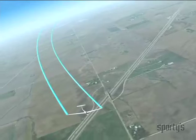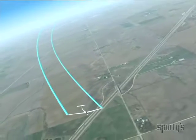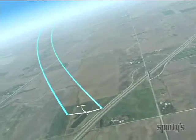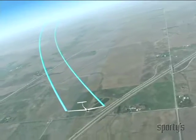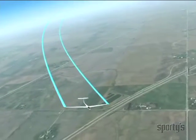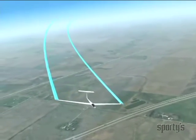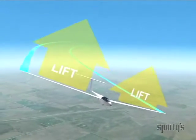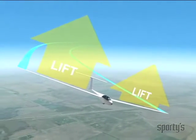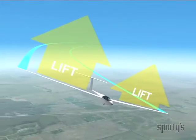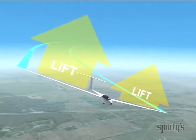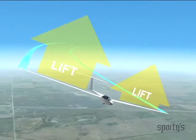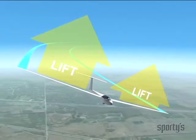Overbanking occurs because the wing on the outside of the turn is moving faster through the air than the wing on the inside of the turn. The faster airspeed allows the outside wing to produce more lift than the inside wing. The additional lift on the outside wing, which is also the raised wing, causes this wing to try and raise even more, or overbank.